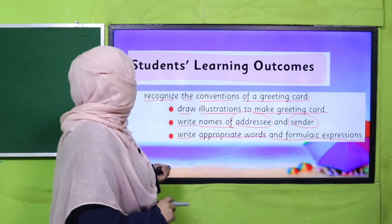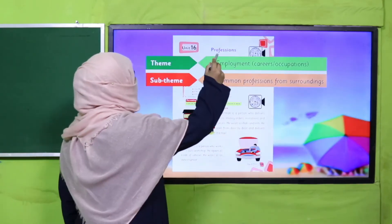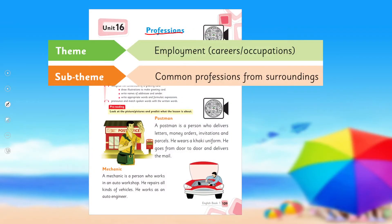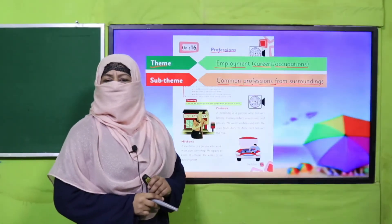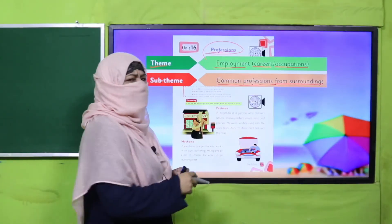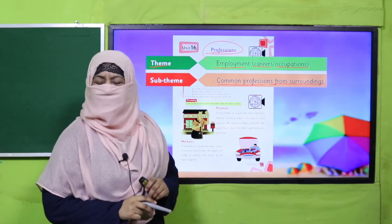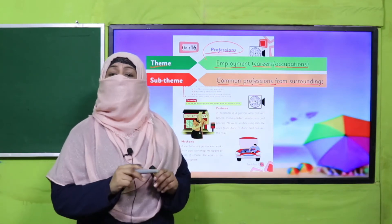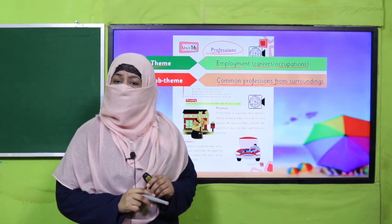Now let's see what this unit is all about. The title of the unit is 'Professions.' Its theme is employment, careers, occupation, and common professions from surroundings. My dear students, what does 'professions' mean? Profession ka matlab hai pesha — zariah maosh, rozgar — meaning a means of livelihood.